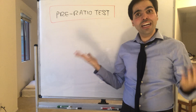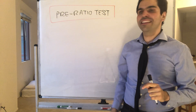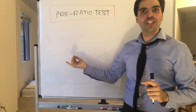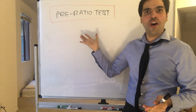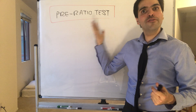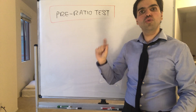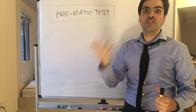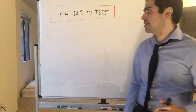Thanks for watching. Today I want to prove a very useful identity called the pre-ratio test. The reason it's called that is because it will be very useful later on to show that the root test is strictly better than the ratio test.